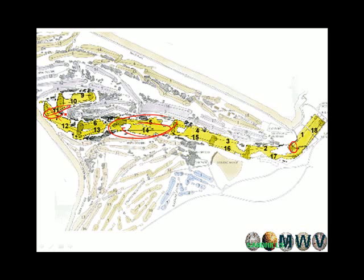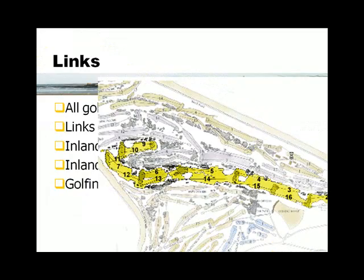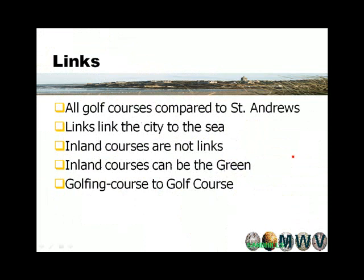We're also going to talk about hole 11, called the Eden hole, coming back. It's named after the Eden Estuary right here, which fills up with water and floods out like a wetland. And as you come in, hole 17 is the first ever golf hole designed by man — that man was Old Tom Morris. We'll talk about Alan Robertson, Old Tom Morris, and Young Tom Morris in section two.